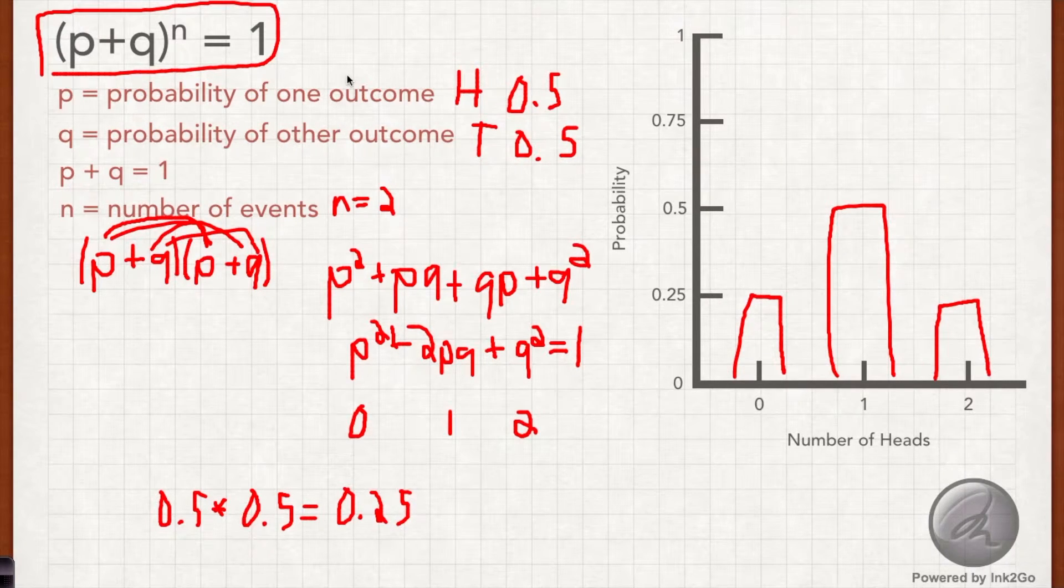So this is very useful, but you can imagine that if I flip the coin 50 times and n was equal to 50, the equation would be much too much to deal with. So that's where this next equation comes in.